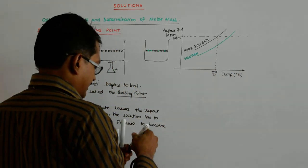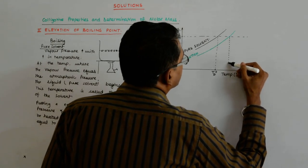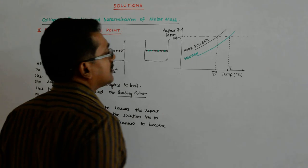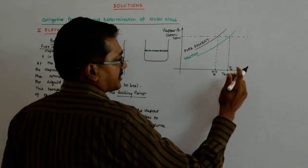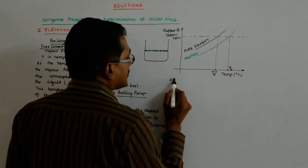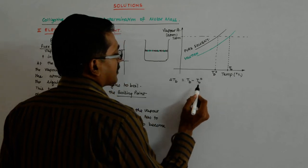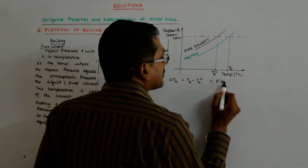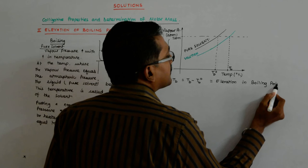So the boiling point of the solution is higher than that of the pure solvent — Tb⁰. The solution has a higher boiling point. We define delta Tb = Tb − Tb⁰, and this is called the elevation in boiling point.